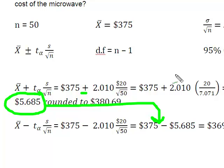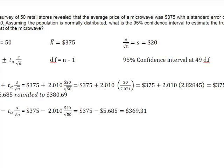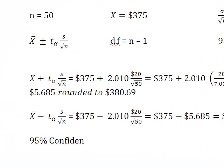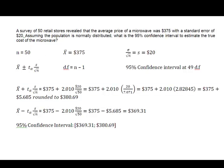So what does that give me? It tells me that the 95% confidence interval of the true cost of a microwave oven is $369.31 to $380.69. I hope this helps, and I will see you guys around Blackboard.